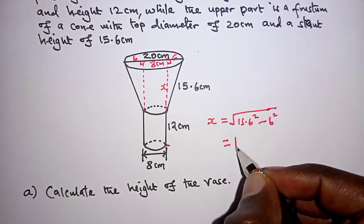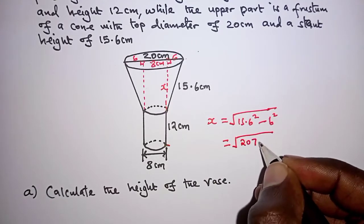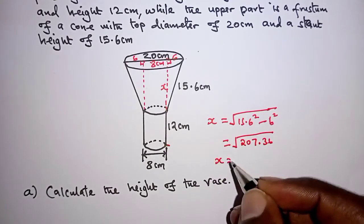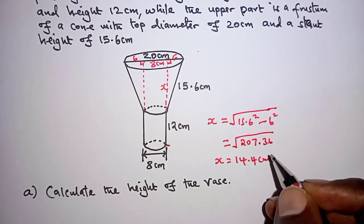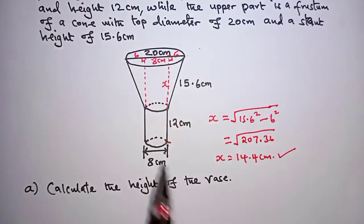we'll get the square root of 207.36, which x is 14.4 centimeters. And from here,